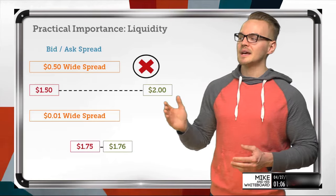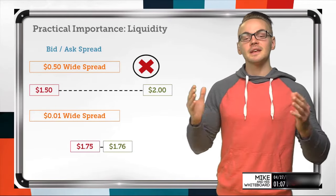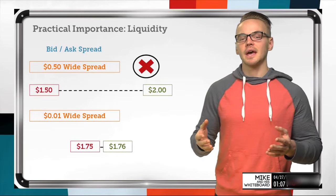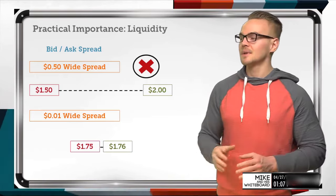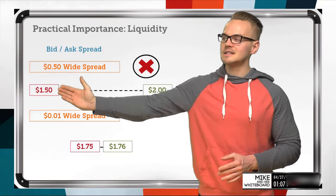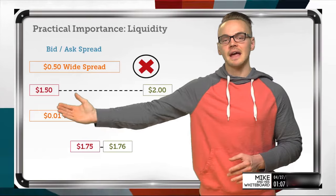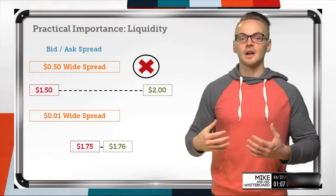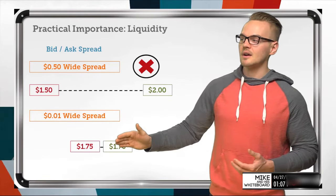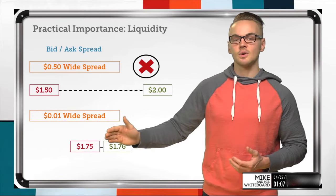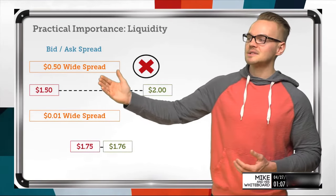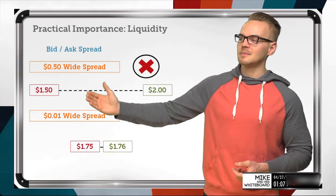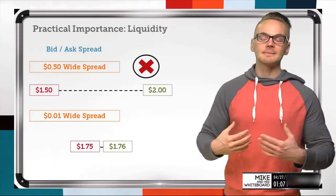That's the power of the bid-ask spread and why it's so important to deal with narrow spreads. Even if we have a wide bid-ask spread in a higher-priced underlying, it can be okay as long as that strike is heavily traded. If a strike is heavily traded, there's a lot of activity in between the bid and ask, and we can route for the mid price to get that fair market price synthetically.